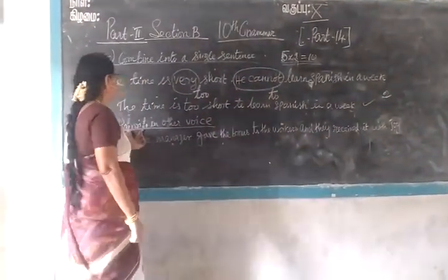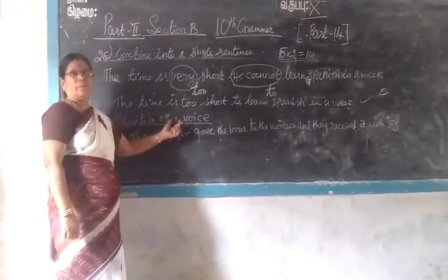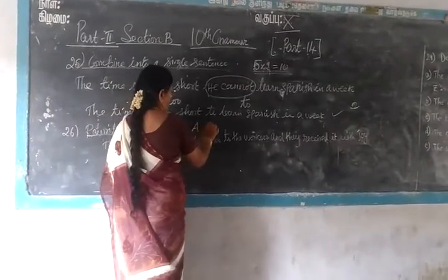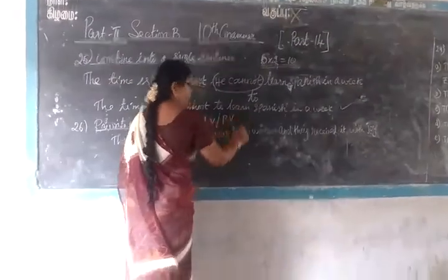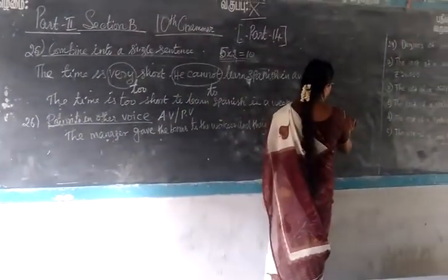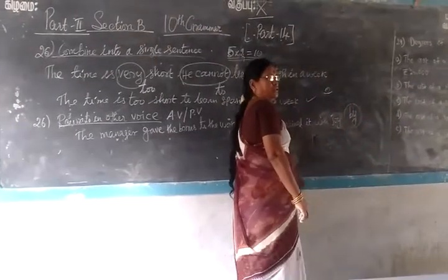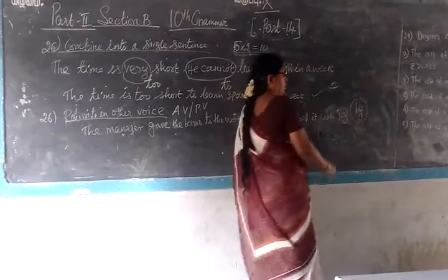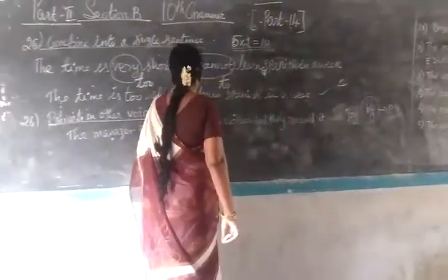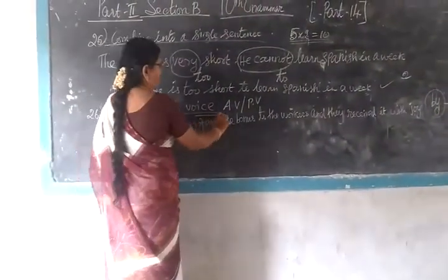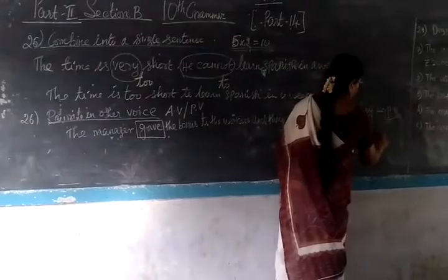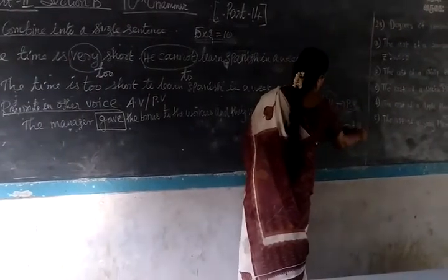Now come to the next one. The question is about active or passive voice — you are going to change it to passive voice or active voice. To identify: if you find the preposition 'by', you can know the given sentence is in passive voice. But here 'by' is not given. The verb is 'gave' — only a single verb. Since it is a single verb, definitely the given one is in active voice.